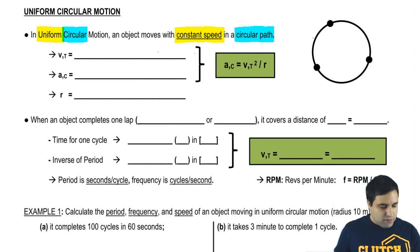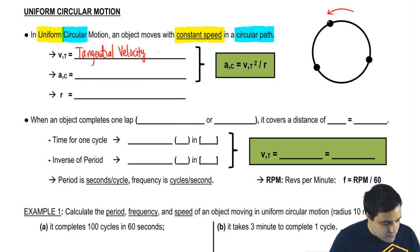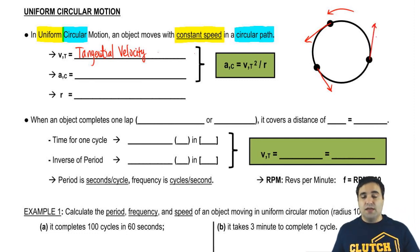So imagine that you're going around a circle like this, let's say this way. At every point in the circle, I've selected three different points here, but really at every point in the circle, you're going to have what's called a tangential velocity. And it looks like this. If you're going this way, it's going to look like this at this point. At this point, it would look like this. And at this point, it would look like this. It's called tangential velocity because it's pointed. It's directed tangent from your path.